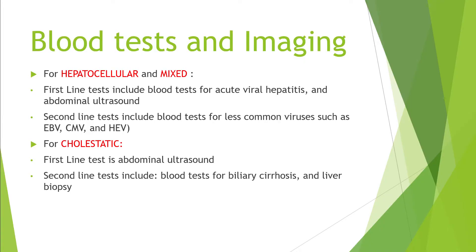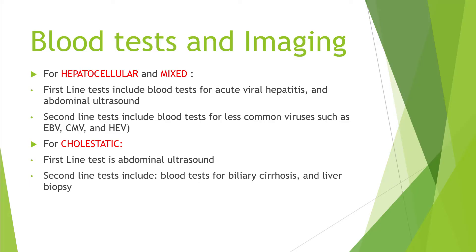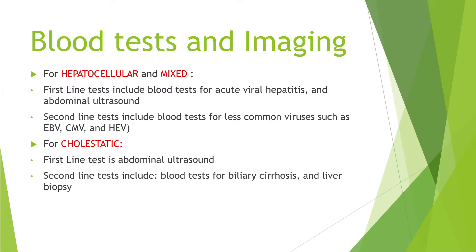For individuals with hepatocellular or mixed damage, the first-line tests recommended by the guidelines are blood tests to rule out acute viral hepatitis by hepatitis A, B, or C, and an abdominal ultrasound. The second-line tests include blood tests for less common viruses known to cause acute liver injury, such as Epstein-Barr virus, cytomegalovirus (CMV), and hepatitis E virus. For individuals with suspected cholestatic damage, the first-line test is only the abdominal ultrasound, and second-line tests include blood tests to rule out biliary cirrhosis and liver biopsy if needed.